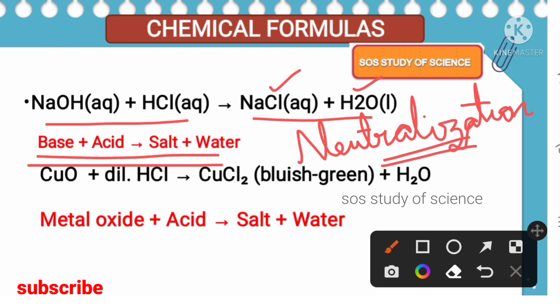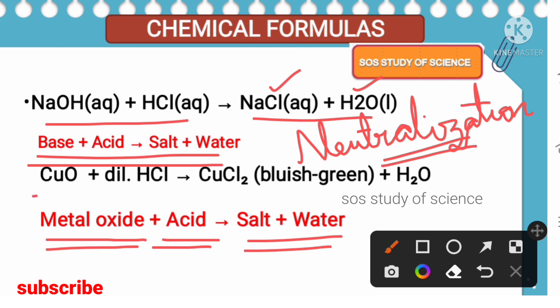Next: what happens when a metal oxide reacts with an acid? Generally, when a metal oxide reacts with an acid, similar to a neutralization reaction, salt and water are formed. For example: copper oxide — copper is a metal combined with oxygen. When copper oxide reacts with dilute hydrochloric acid, copper chloride salt is formed, which is bluish-green in color, along with water.